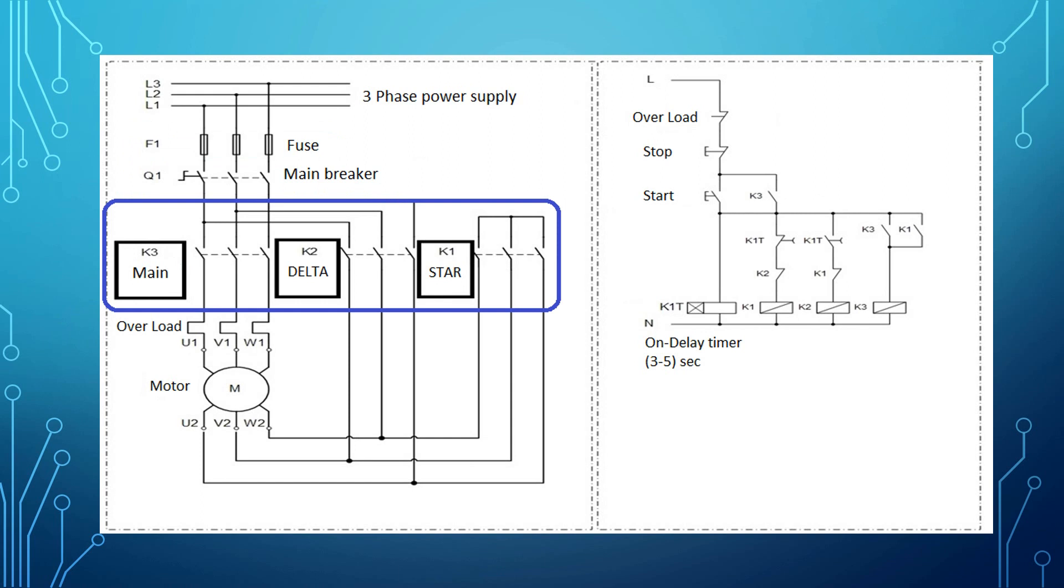The main, star, and delta contactors. The main overload that is connected directly to the main contactor, and finally the motor.